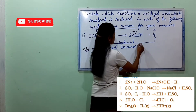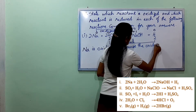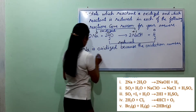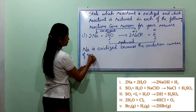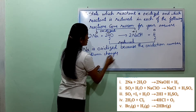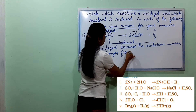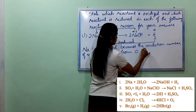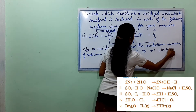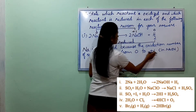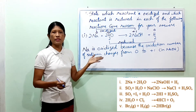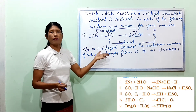Because the oxidation number of sodium changes from 0 to +1 in NaOH. Na is oxidized. H2O is reduced.